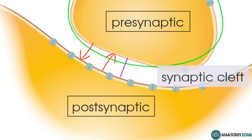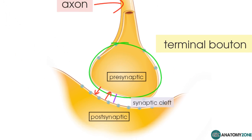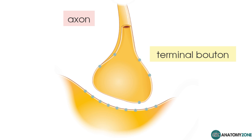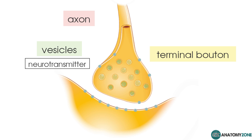Let's take a look at what happens at this junction. Within this synaptic bouton, you've got vesicles which are membrane-bound structures containing the neurotransmitter — the chemical which will bind to the postsynaptic receptors.